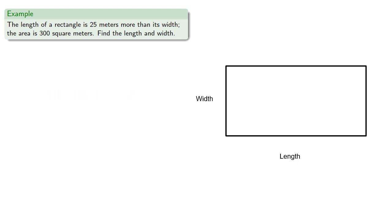And we can translate the given information into an equation. Using L for length and W for width, the length 25 meters more than the width can be written as L = W + 25, and we know the area, which is the product of length and width, so we know that LW = 300.